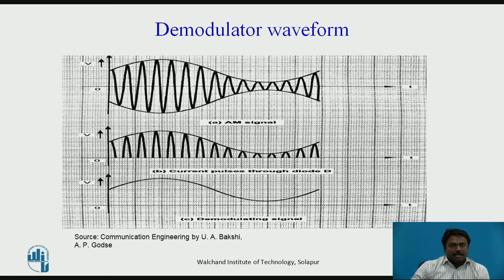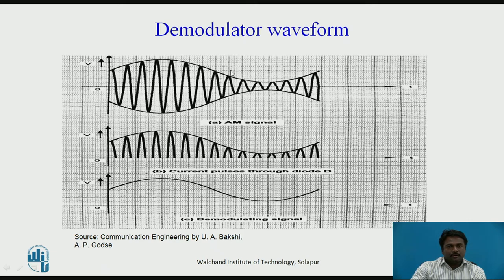These are the entire waveforms. As you can see, the first waveform is the AM input waveform, the second is the output of the diode circuit, and the third is the output of the RC filter circuit.